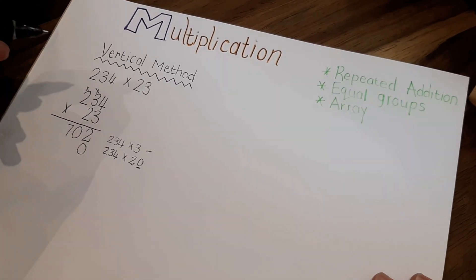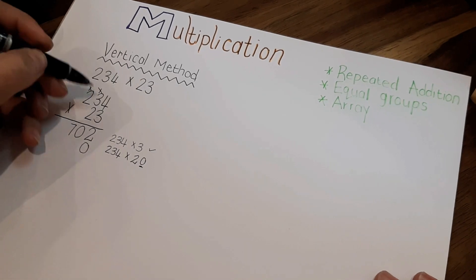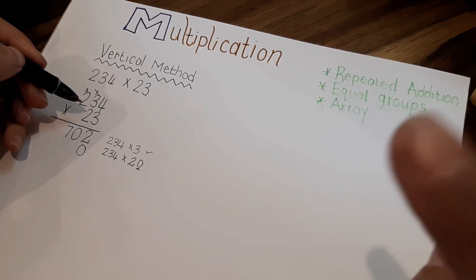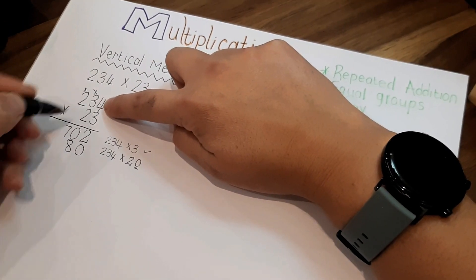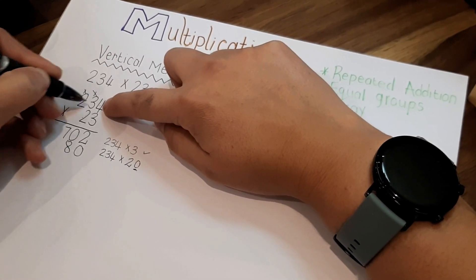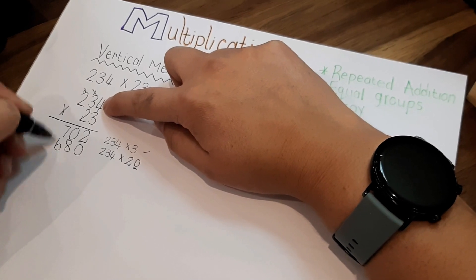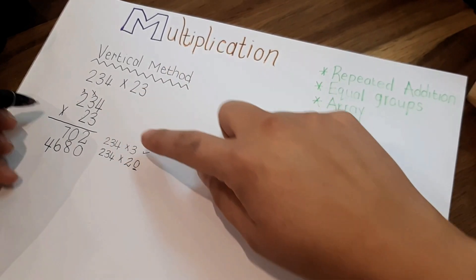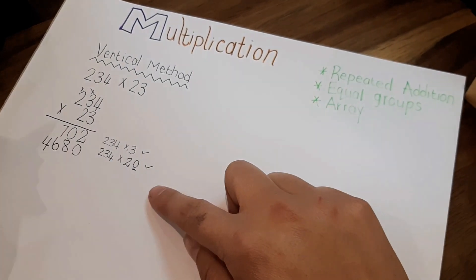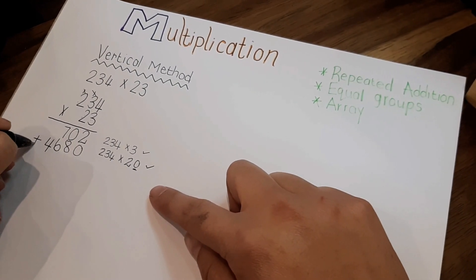Any number multiplied by a multiple of 10 ends on a 0. Now we can go on multiplying with the 2. 2 times 4 is 8, 2 times 3 is 6, and 2 times 2 is 4.